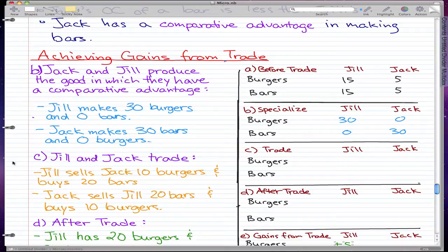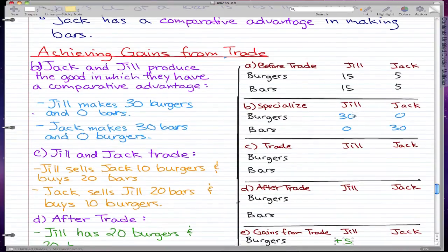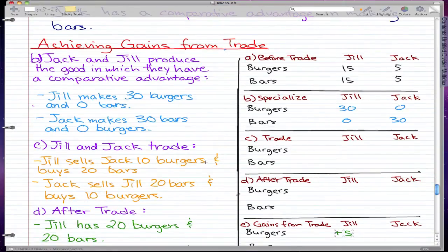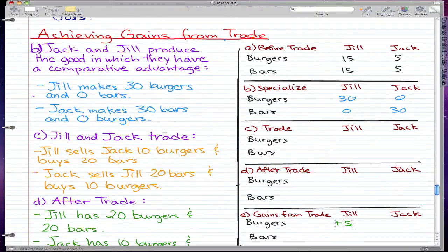Now that we have that out of the way, we see that Jill and Jack are producing only one item: burgers for Jill, bars for Jack. Now we're going to have Jack and Jill trade.